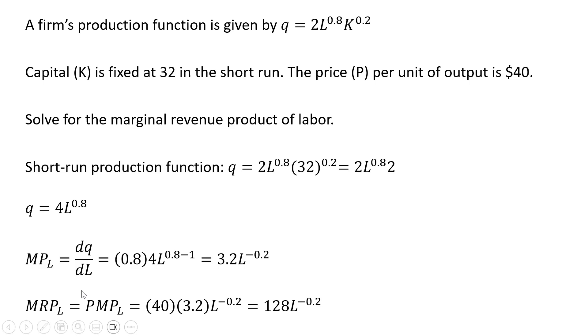Now to get the marginal revenue product of labor, we're almost done. We're just going to take the price, this $40, and multiply it by the marginal product of labor. Doing that, 40 times 3.2 is 128, all multiplied by L raised to the minus 0.2 power.